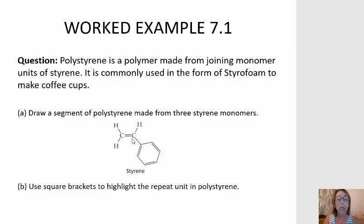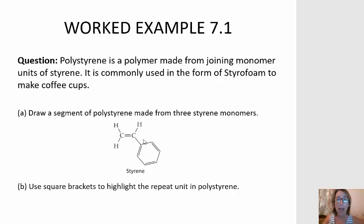Because no atoms are added or removed, all we have to do is clearly look at the monomer, count how many atoms there are, and the same will be true in the polymer. So styrene has this double bond right here that will form a single bond when it becomes a polymer.